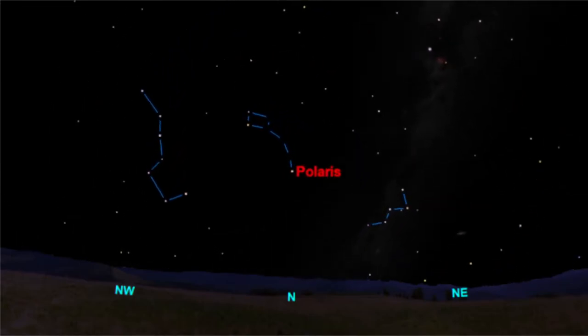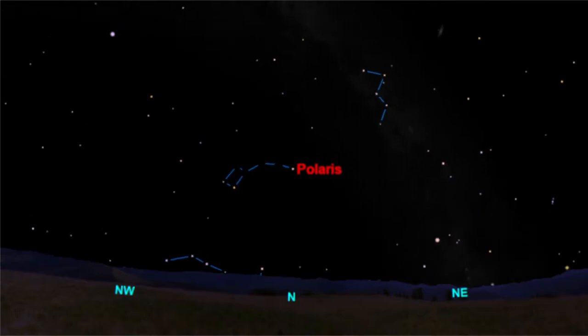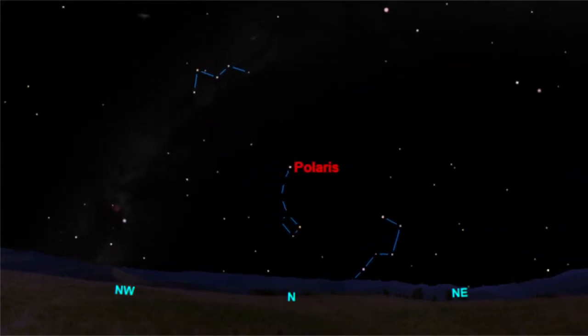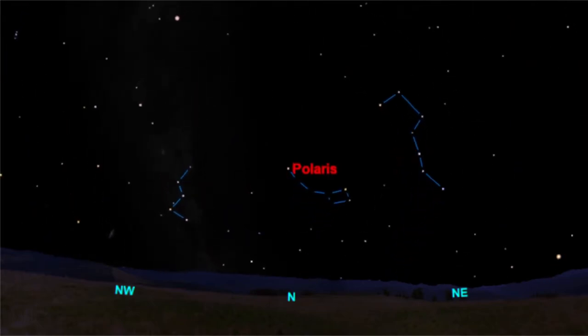Cassiopeia and the Big Dipper lie on opposite sides of Polaris. They, too, circle around it. So when Cassiopeia is high in the sky, the Big Dipper is down below the horizon.